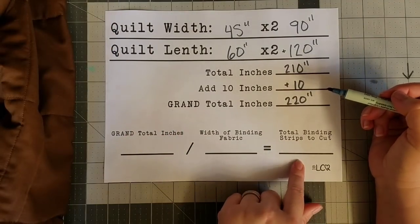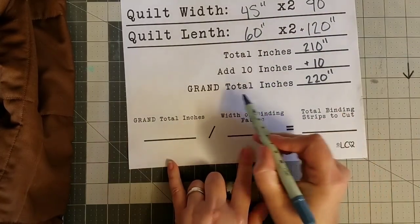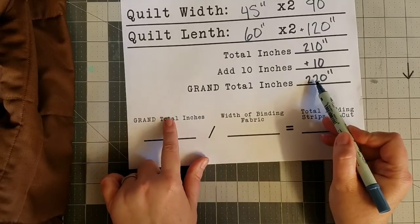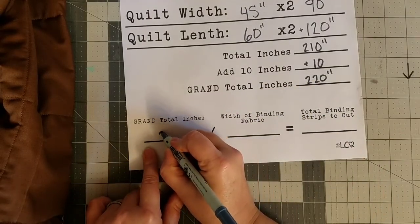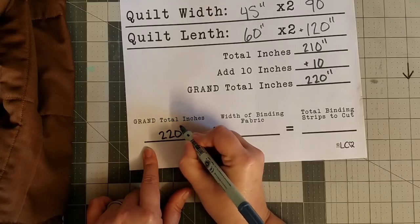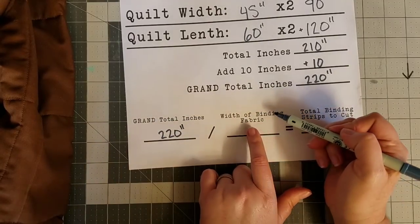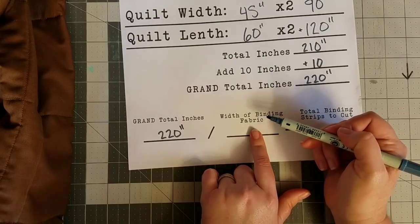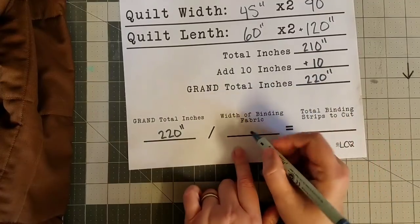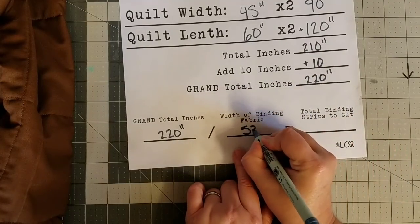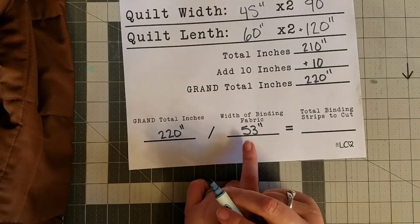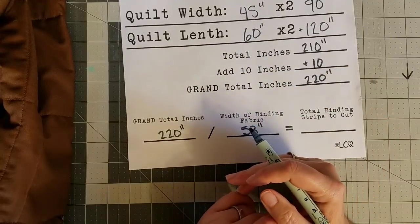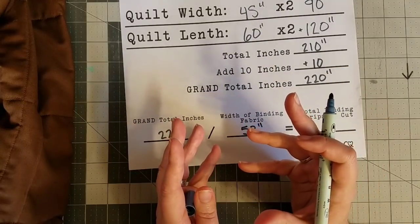We're going to take the grand total of inches, this number right here, and put it on this line here, so 220 inches. And then we're going to measure the width of the fabric that we're making our binding from. In my case, my piece was 53 inches because I was using a scrap of fabric from the back of the quilt. Most of the time I just use yardage and it's like 43 or 44 inches wide.